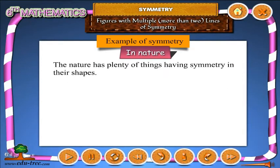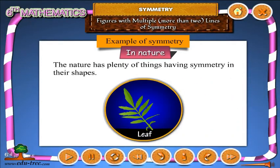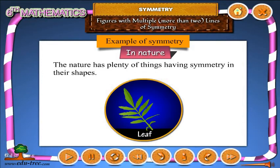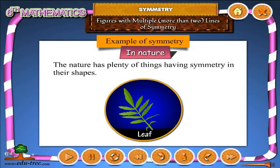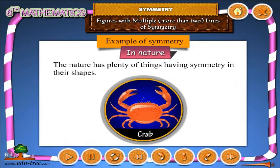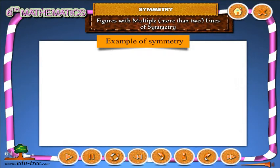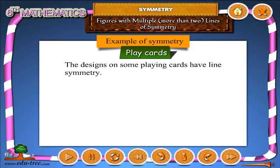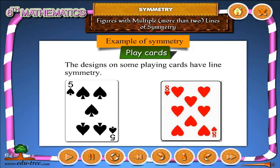In nature, there are plenty of things having symmetry in their shapes — leaf, starfish, crab. Playing cards: the designs on some playing cards have line symmetry.